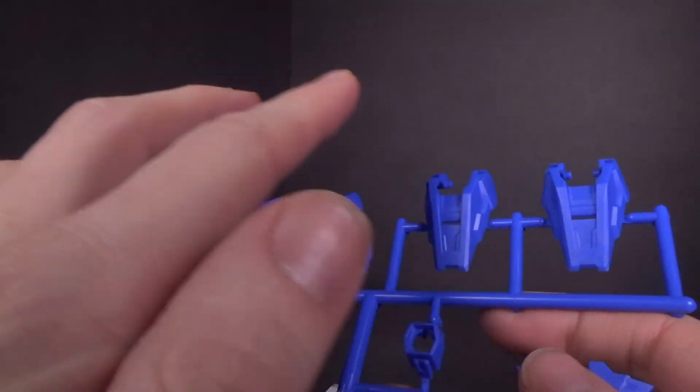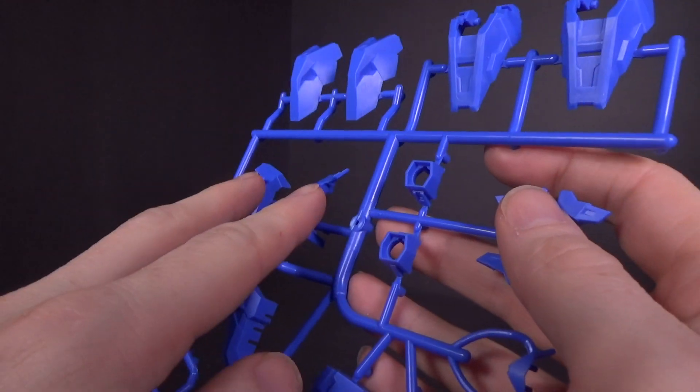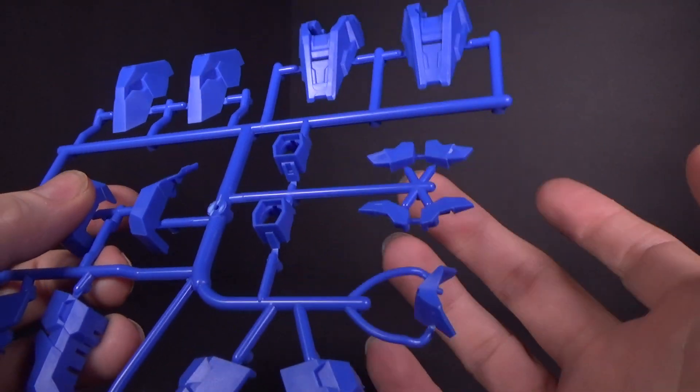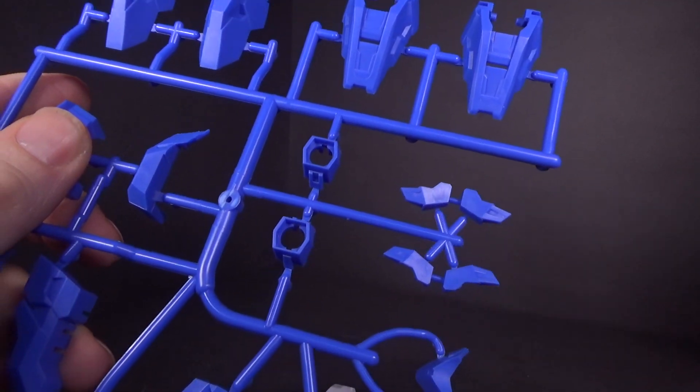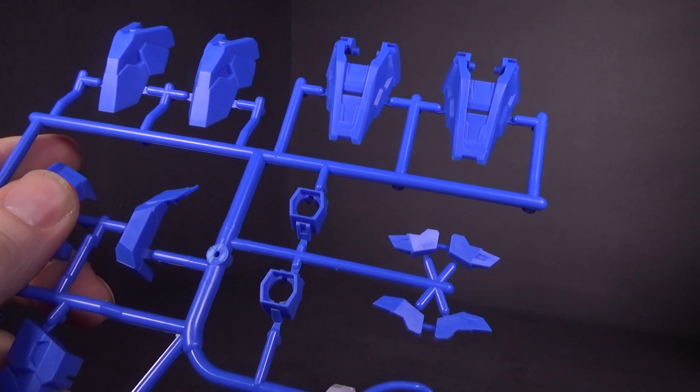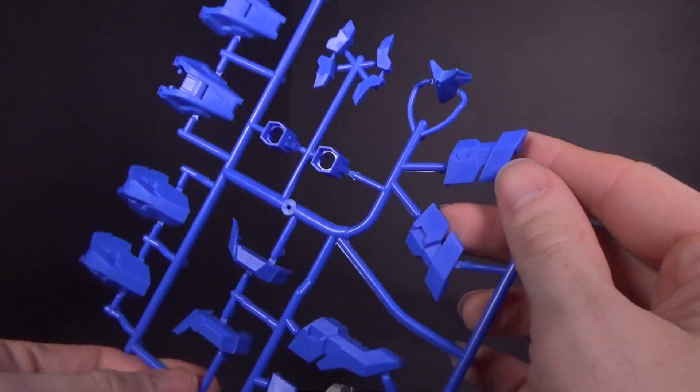So we got the calves, the knees, the chest, the shoulders, the wrists. I'm not really sure what these are. Hmm. No, I'm not really sure. But anyways, yeah, they look good too.